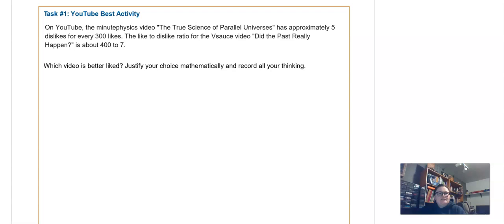So this first task is talking about some YouTube videos. The first YouTube video is the True Science of Parallel Universes. You can look it up and watch it if you want. It has approximately 5 dislikes for every 300 likes. The like to dislike ratio for the Vsauce video, Did the Past Really Happen, is about 400 to 7. So what you're supposed to decide is which video is liked better, and then justify mathematically.